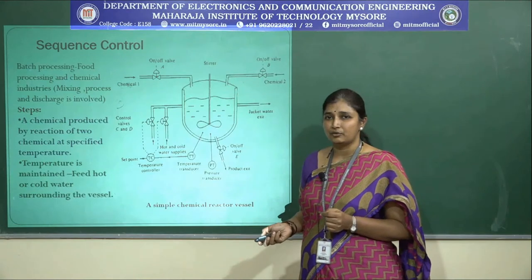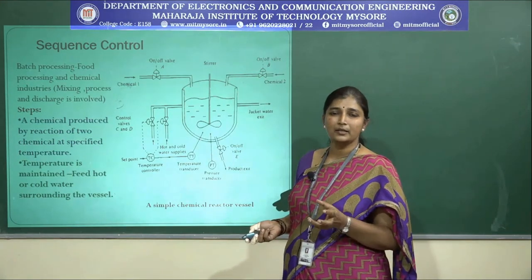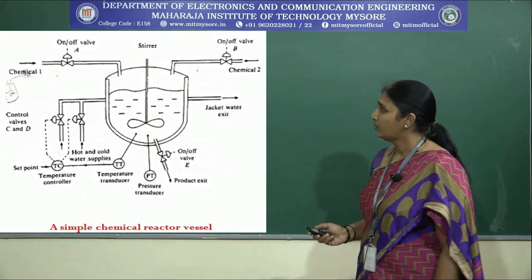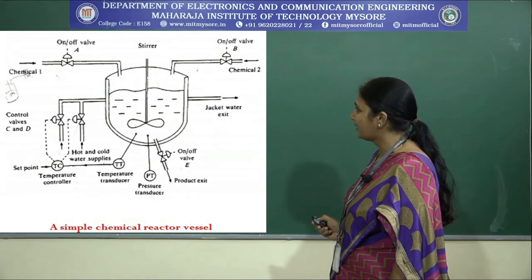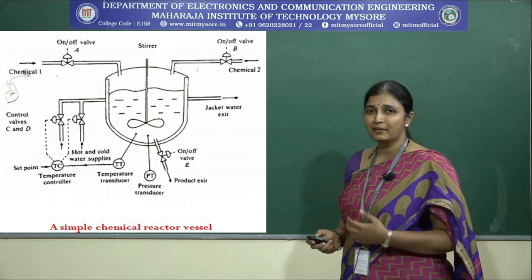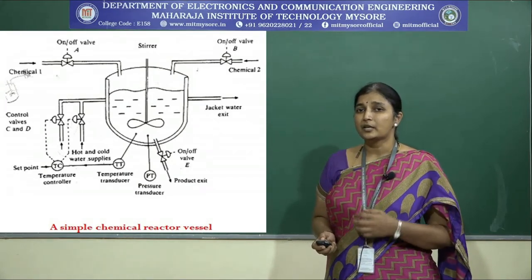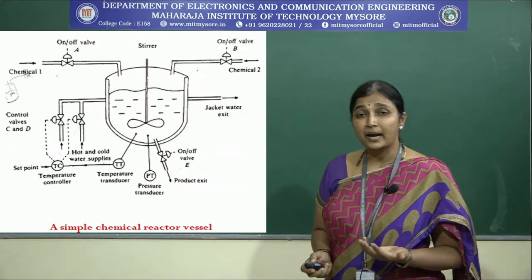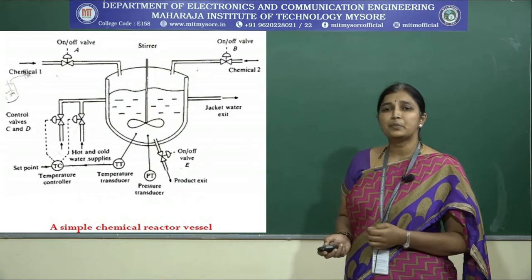Let us now get into sequential control. Sequential control goes hand in hand with batch processing and is typically adapted in bakery products, chemical reactors, and baking industries. We can explain sequential control with a simple chemical industrial plant showing how a reactor's valves are operated and monitored. Let us take an example of a simple chemical reactor.